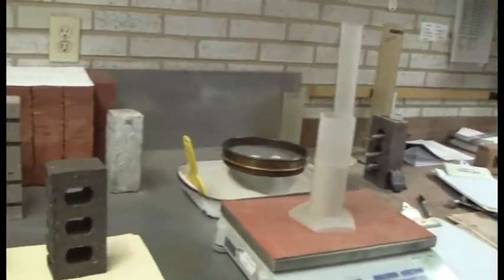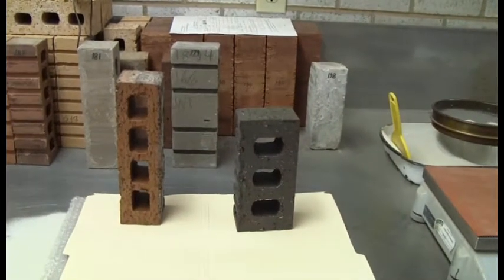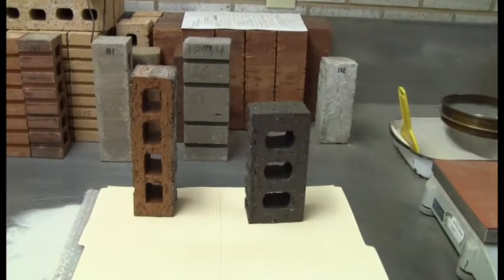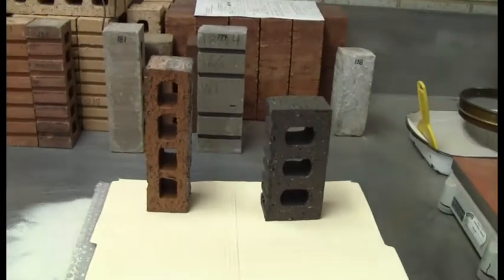And vice versa on the C652, normally the plants that run residential will normally try to keep the void as high as possible, so it's not usually an issue. More so for the commercial brick, because you have to stay below 25% to be able to certify C216. And that's how you do a void measurement on a brick.